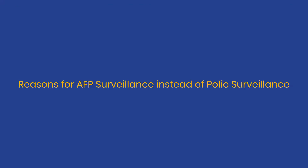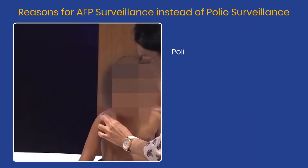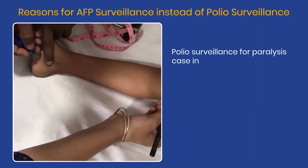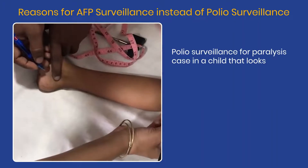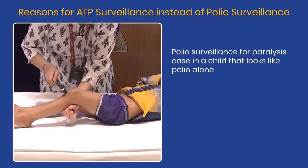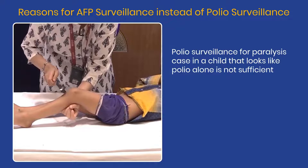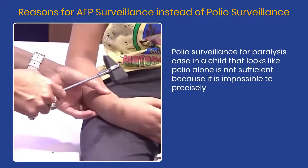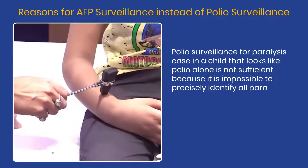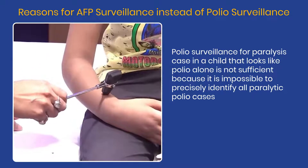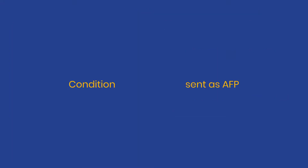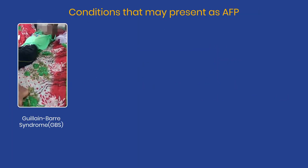Now let us look at the reasons for AFP surveillance instead of polio surveillance. Polio surveillance for paralysis cases in a child that looks like polio alone is not sufficient, because it is impossible to precisely identify all paralytic polio cases clinically.